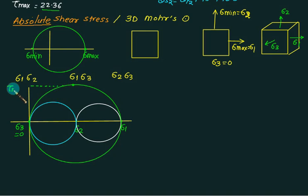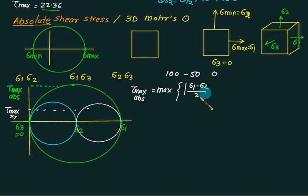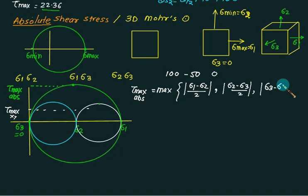The procedure is straightforward: look at sigma one, sigma two, and sigma three, and draw the three possible circles. Mathematically, you can find the absolute maximum shear stress using the formula: tau absolute max equals the maximum of |sigma one minus sigma two| / 2, or |sigma two minus sigma three| / 2, or |sigma three minus sigma one| / 2. This is the mathematical procedure; alternatively, you can quickly draw the three Mohr circles and find tau max absolute directly.